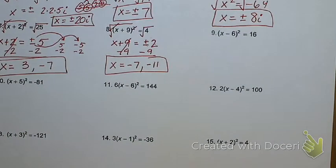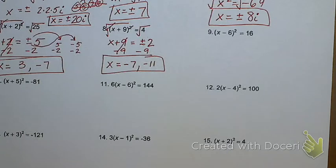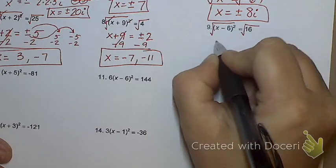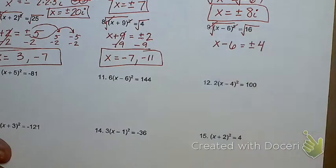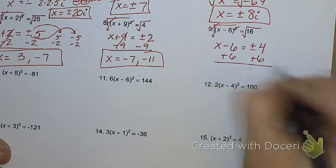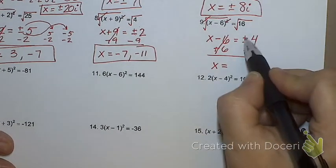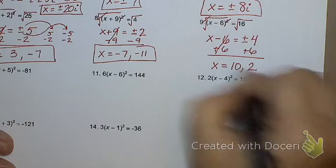You try number nine now. So did you start off by getting x minus six equals positive and negative four? So what do you do? You add six, and if you want to write out both equations, you can. If you want to be lazy, like me, no shame, positive four plus six, ten, negative four plus six, two. There's your two answers.